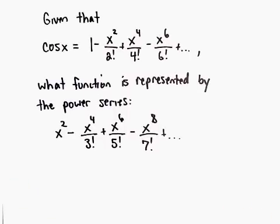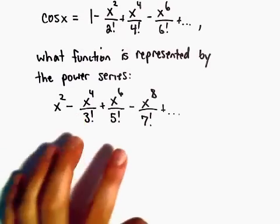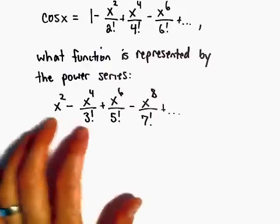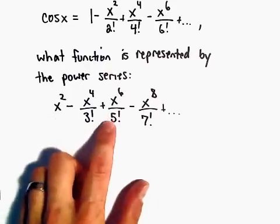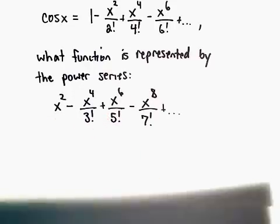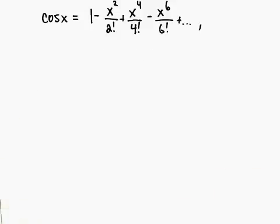So we're given the power series for cosine x is 1 minus x squared over 2! plus x to the 4th over 4! minus x to the 6th over 6!, etc. We want to find what function is represented by the series x squared minus x to the 4th over 3! plus x to the 6th over 5! minus x to the 8th over 7!, etc.